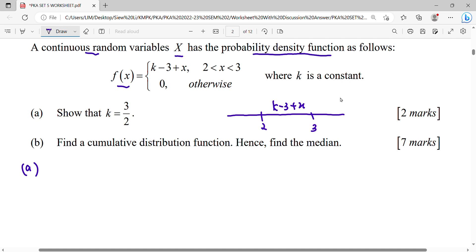As we know, continuous random variable total probability must be equal to 1. So in continuous random variable, probability is represented by total area. Total area continuous random variable must be equal to 1. So we're going to integrate 2 until 3 for this function, equals to 1.